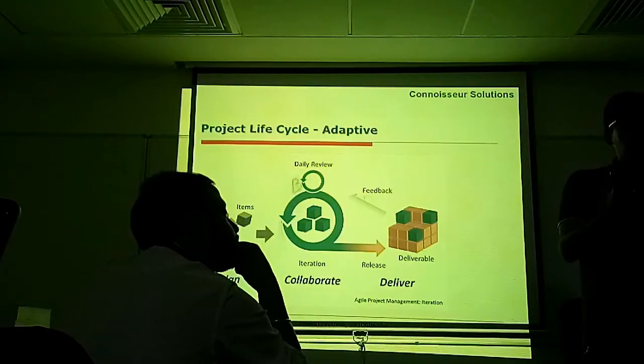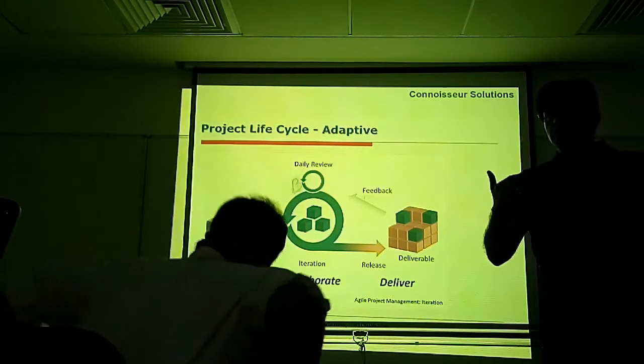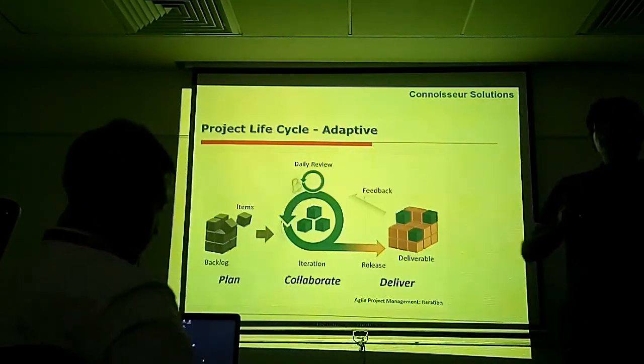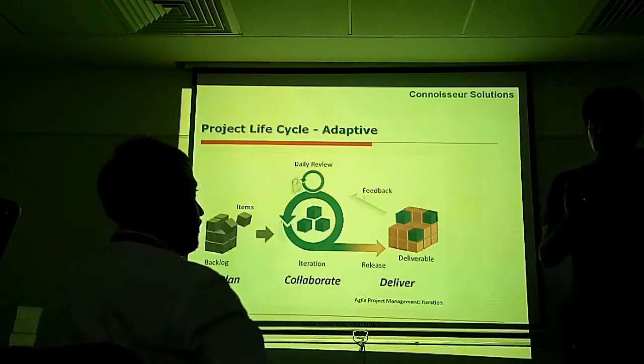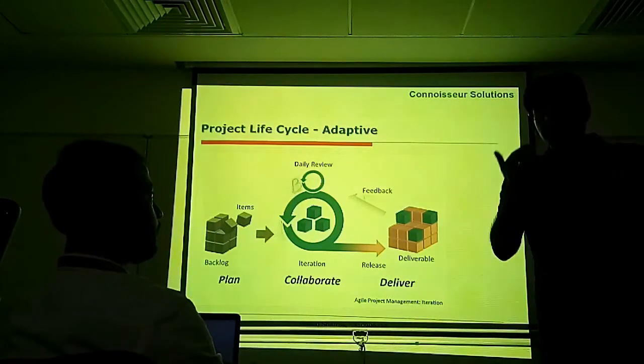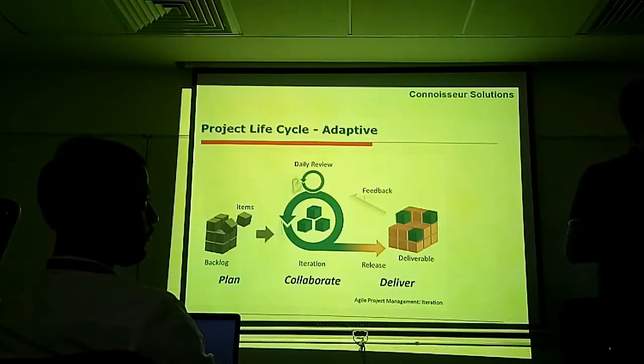From the product backlog, based on the priorities, a sprint backlog is evolved. Sprint backlog means scope of only one iteration. Whereas product backlog is overall scope.